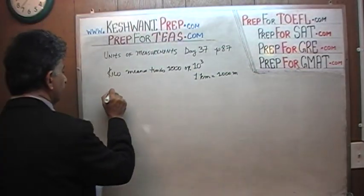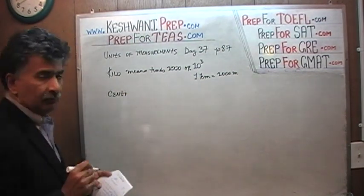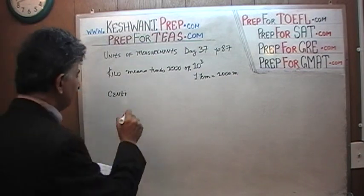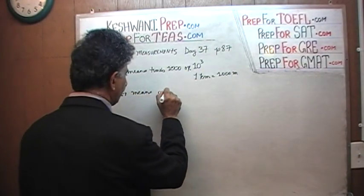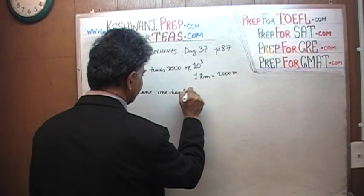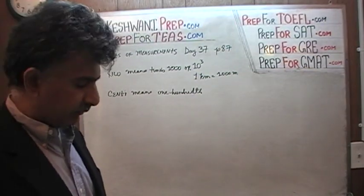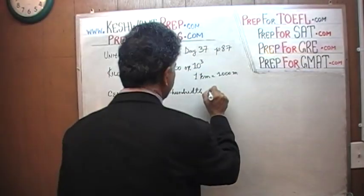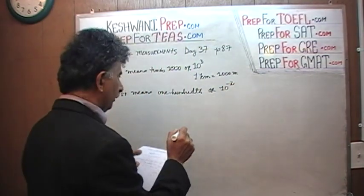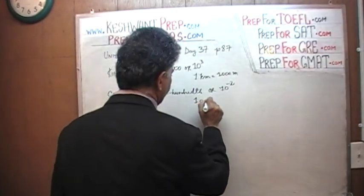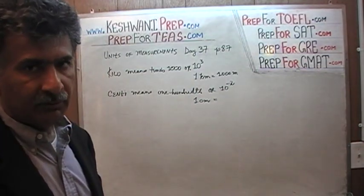The next prefix is Centi. What does the prefix Centi mean? Centi means one hundredth — not 100 times, but one hundredth, that is one over 100. Or if you like, 10 raised to negative 2. For example, if we come across one centimeter, one centimeter means one hundredth of a meter.